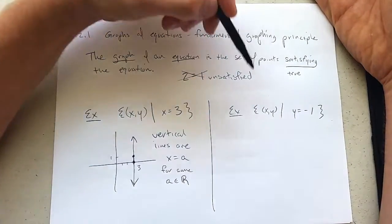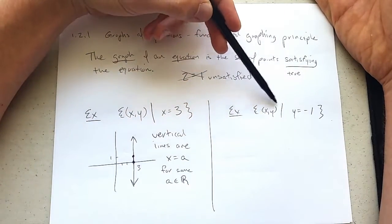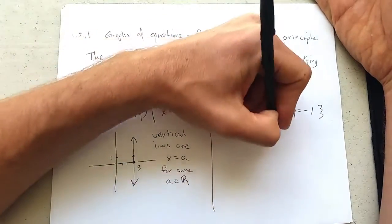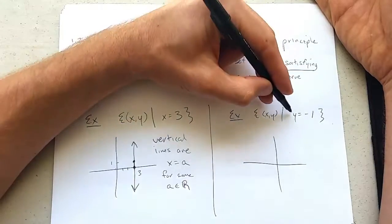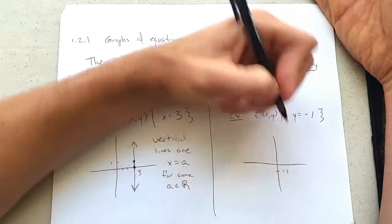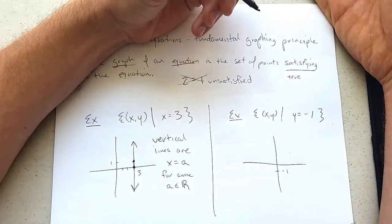Next example we're going to look at is really similar. Start with points such that y equals negative 1. All right y equals negative 1. This is not an x-coordinate it's a y-coordinate. There's negative 1. I shouldn't have written my negative 1 there. We're going to be drawing around top of that.